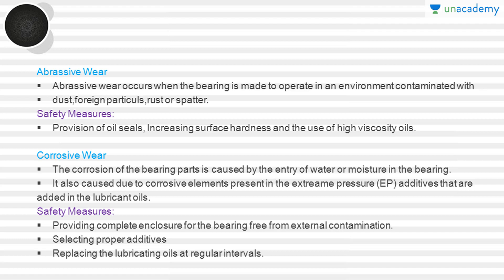Corrosive wear of bearing parts is caused by the entry of water or moisture into the bearing. It is also caused by corrosive elements present in the extreme pressure additives added to lubricant oils. Safety measures include providing a complete enclosure for the bearing to keep it free from external contamination, selecting proper additives, and replacing lubricating oils at regular intervals to reduce corrosive wear.